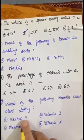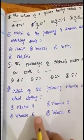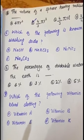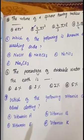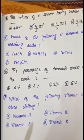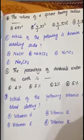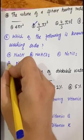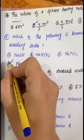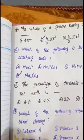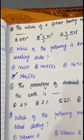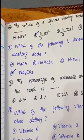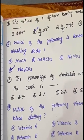MCQ number 5 from chemistry: which of the following is known as washing soda? Options: NaOH, NaHCO₃, NaNO₃, Na₂CO₃. The correct option is D — Na₂CO₃ is called washing soda. NaOH is called caustic soda, and NaHCO₃ is called baking soda.